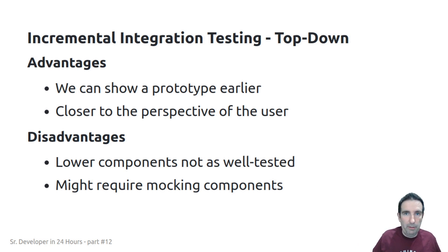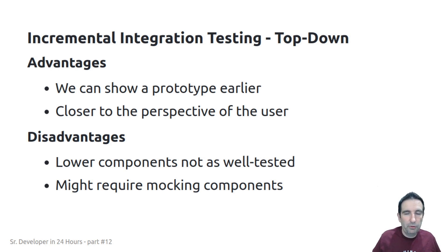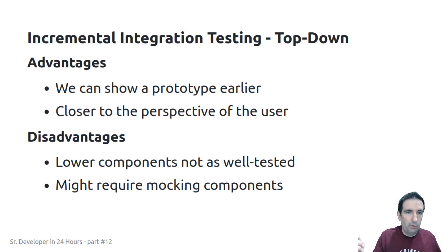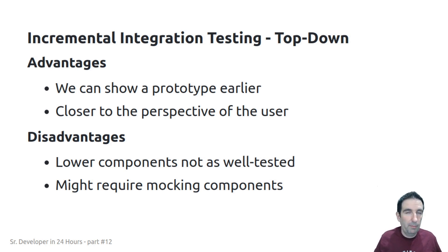What are the advantages of top-down testing? First, we can show a prototype earlier. Because we are testing things from the perspective of the user — whether a human user or an external system hitting our system — we're getting closer to being able to validate that our assumptions really match the expectations of the users or whoever is giving us requirements. We're closer to the perspective of the user, which is always a big advantage. However, there are disadvantages: lower-level components might be less well-tested because they're further down the stack.